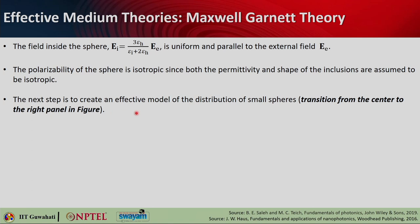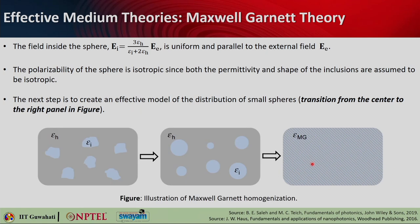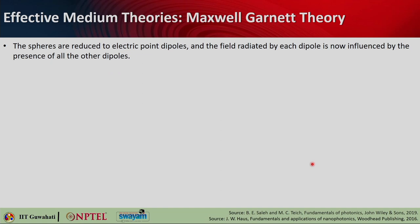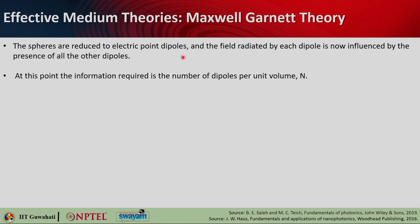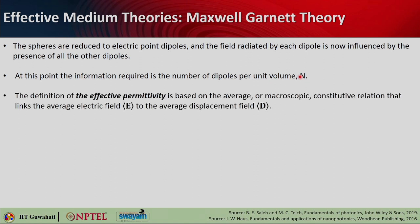The next step is to create an effective model of the distribution of the nanospheres, which allows a homogenization picture. The spheres are now reduced to point dipoles and the field they radiate will influence all other dipoles in that medium. In such a case, you need information about how many such dipoles exist in unit volume — let us assume there are N such dipoles per unit volume.